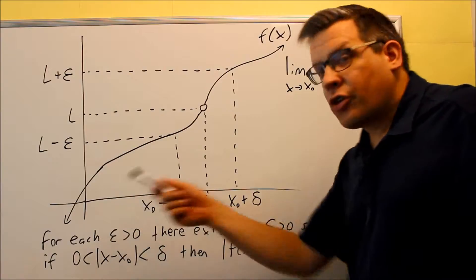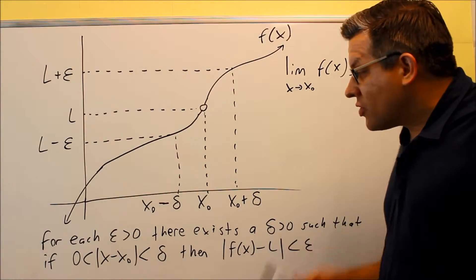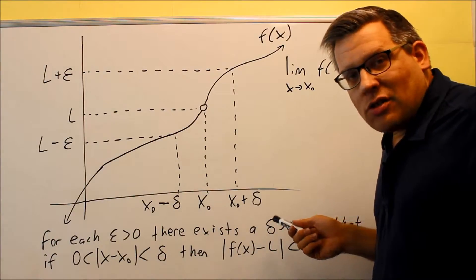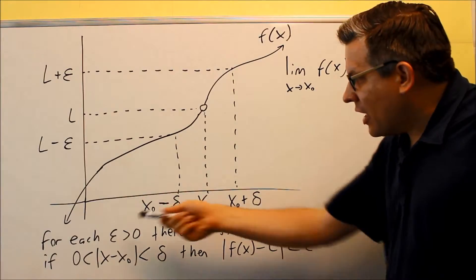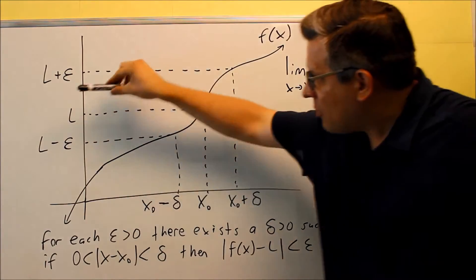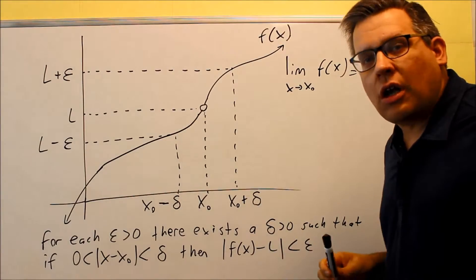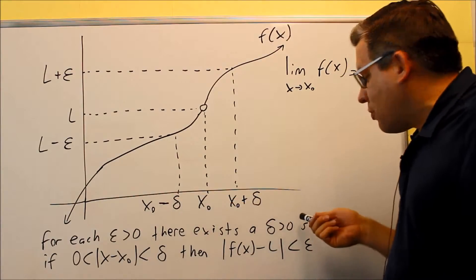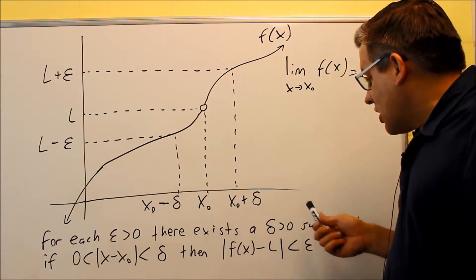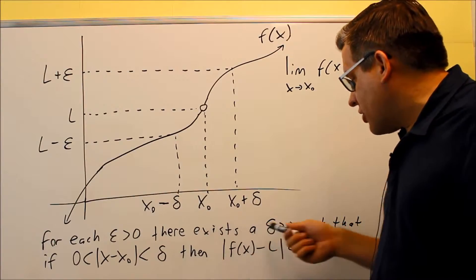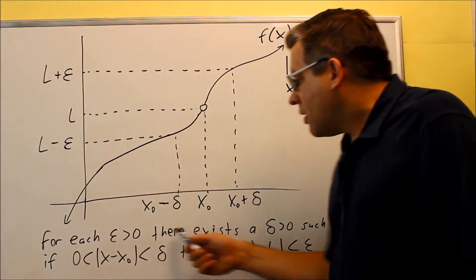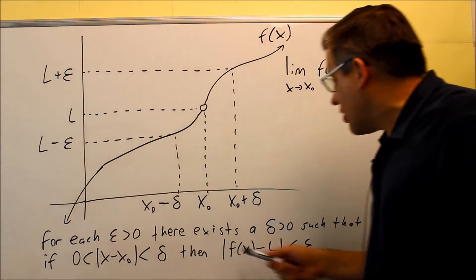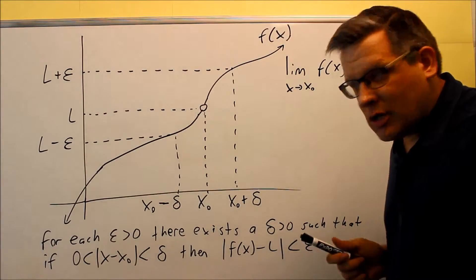Now we're going to talk about the statement you'll be using when you write your proofs. This is saying: if there's an error in the y direction, then there's an error in the x direction. If my epsilon were equal to zero, that means I'd be right at my limit and right at x₀ with no error. The formal definition says: for each epsilon there exists a delta such that if the x condition holds, then the y condition holds — if there's a difference in the x direction, there's a difference in the y direction.